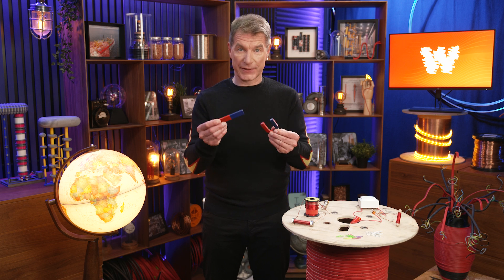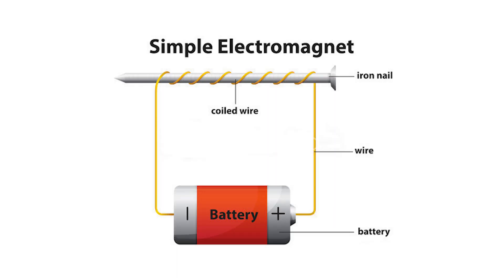Magnets are made up of solid material and have permanent properties. But an electric circuit with a conductive coil can also act as an intermittent magnet depending on its current flow. This is called an electromagnet, where current flows through a wire and creates a magnetic field around the wire itself.